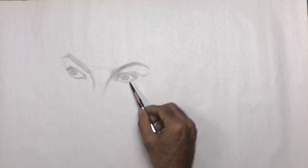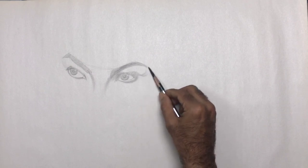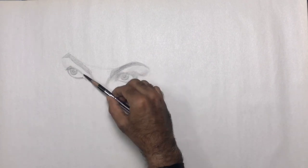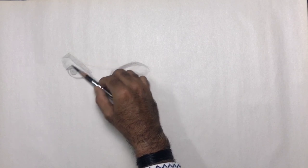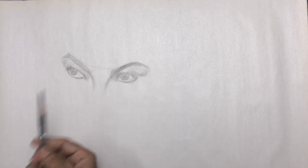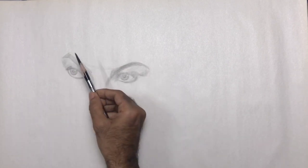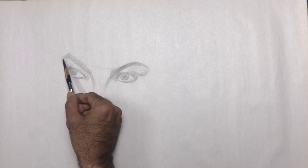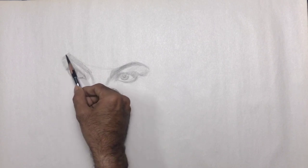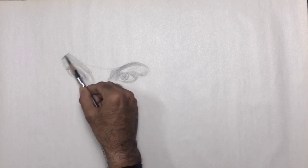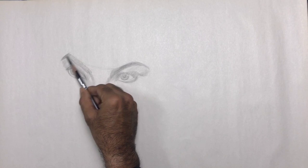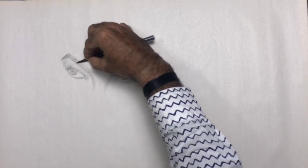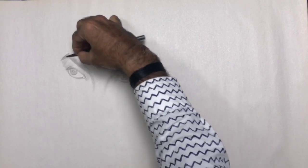I'm using the side of the lead to lay down a very light value so that it covers the area where I want to shade, leaving out the portion for the whites. In other words, a base layer is applied to separate out the shape that needs to be shaded, whereas the left-out shape depicts the highlight.